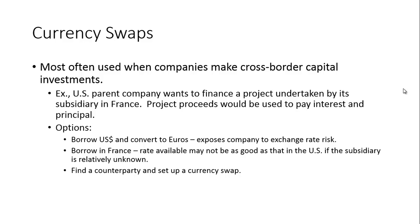Currency swaps are most often used when companies make cross-border capital investments. For example, a US parent company wants to finance a project undertaken by its subsidiary in France and will use the project proceeds to pay the interest and principal. Their options include: borrow in the US and convert to euros, which exposes the company to exchange rate risk; borrow in France, where the rate may not be as good because the subsidiary is relatively unknown; or find a counterparty and set up a currency swap.